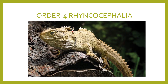The next order is Rhynchocephalia. Its body is small and elongated. They have pentadactyl, clawed, burrowing limbs. Skin is covered by granular scales and a mid-dorsal row of spines. Skull is diapsid. Quadrate is fixed. Vertebrae are amphicoelous or biconcave. Numerous abdominal ribs are present. Dentition is acrodont. Cloacal aperture is transverse. Heart is incompletely four-chambered. No copulatory organ in male.